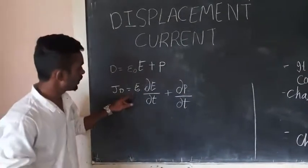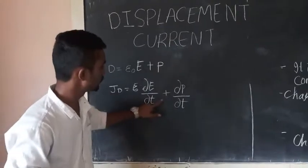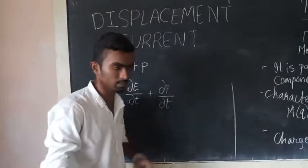The displacement current density equals epsilon zero times del E upon del t plus del P upon del t.